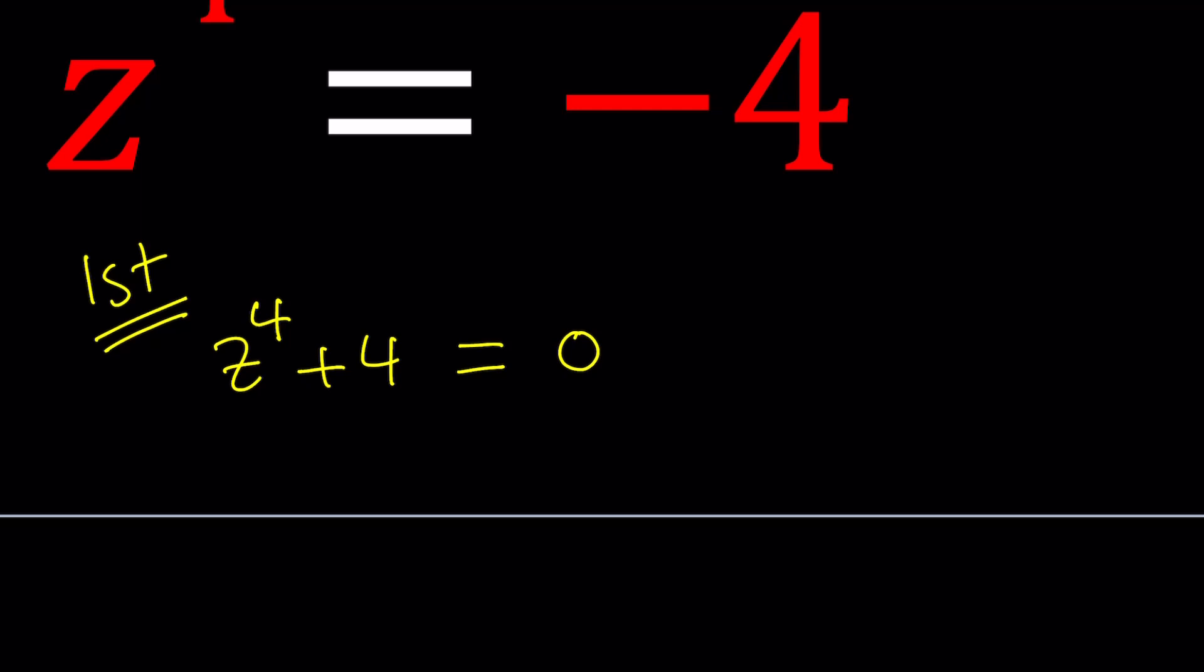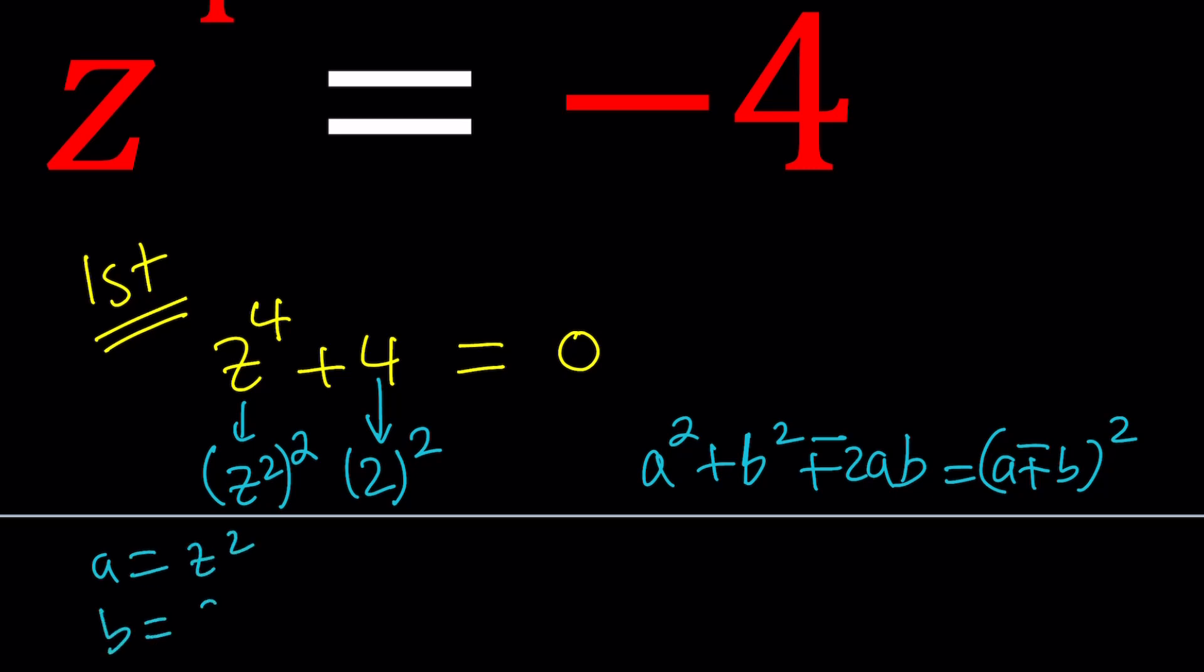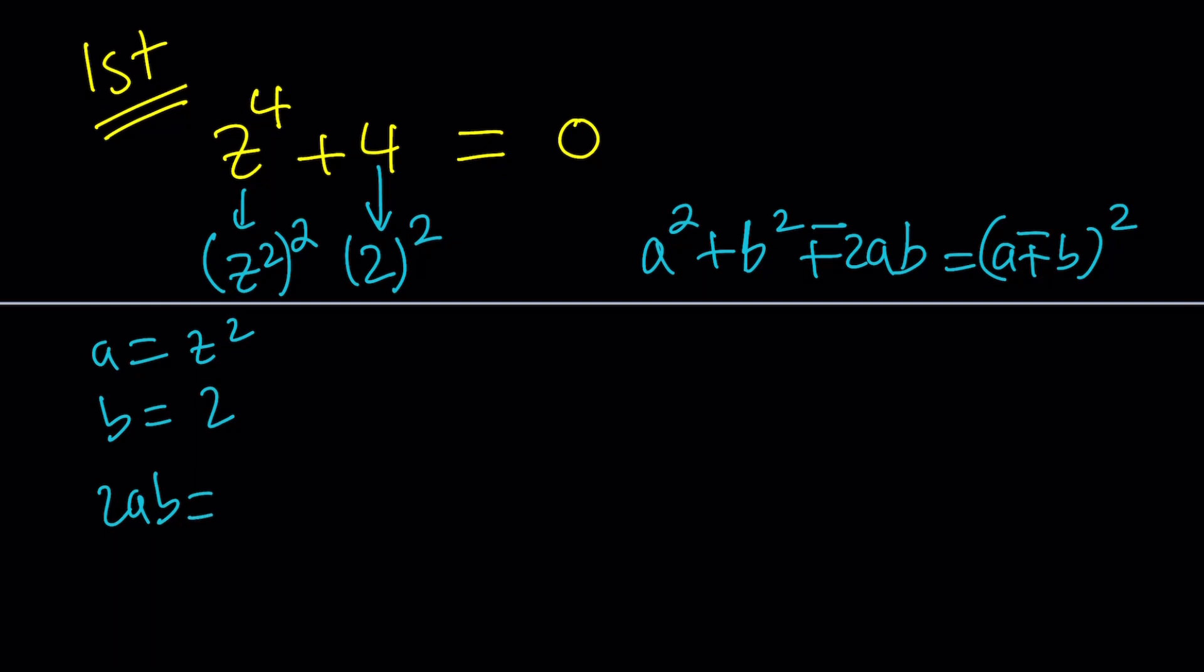So think about it. Z to the fourth power is z squared squared, right? And 4 is 2 squared. So we have the a squared and the b squared. What we're missing is 2ab. Remember, when you have a squared plus b squared plus 2ab, that can be written as a plus b squared. And of course, if you put a minus sign here, you can put a minus sign here too. Make sense? So what is 2ab in this case? Since a is z squared and b is 2, 2ab would be 4z squared.